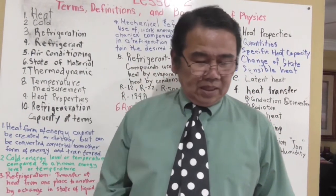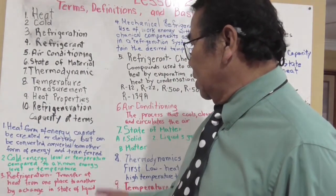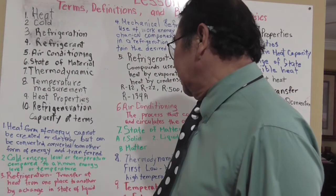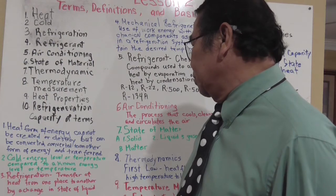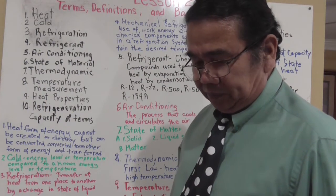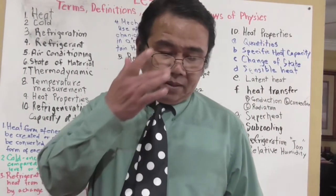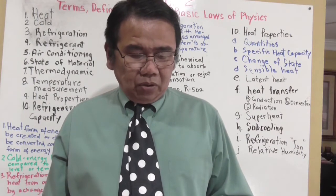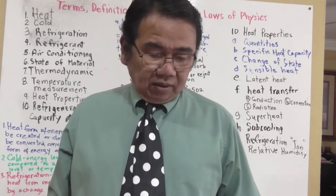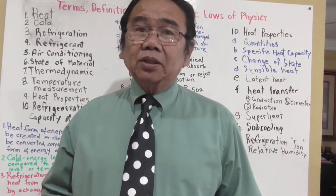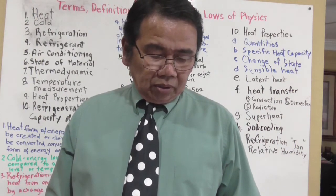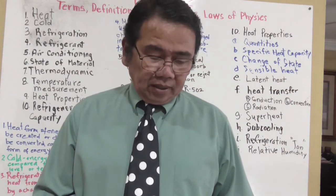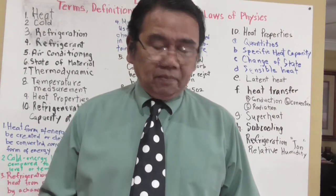The second term is cold. Cold refers to lower energy levels or temperature compared to a known energy level or temperature. Some definitions say it is the absence of heat, indicating absolute zero — where there is no heat at all. Absolute zero is minus 460 degrees Fahrenheit or minus 273 degrees Celsius.